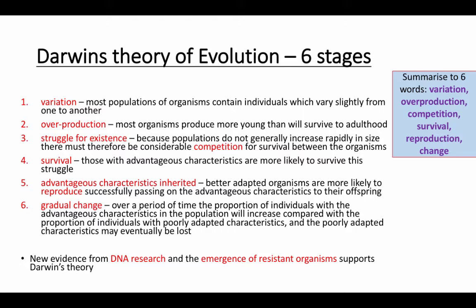Any question that you're asked about evolution and natural selection can all be answered in the exact same way. On the slide on the screen you can see the 6 steps you need to remember. Step 1 is variation — what that means is differences. Among any group of species or any population there is variation; they are all different in some way or another. Even if you're the same species you're still going to have differences, like humans are the same species but we're all very different.